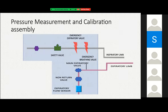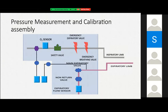In addition to the mechanical parts, we need sensors to regulate and sense flow and FiO2. We have an oxygen sensor in the inspiratory limb which senses the oxygen concentration. We also have pressure calibration valves and pressure sensors which sense pressure in both the inspiratory and expiratory limbs.